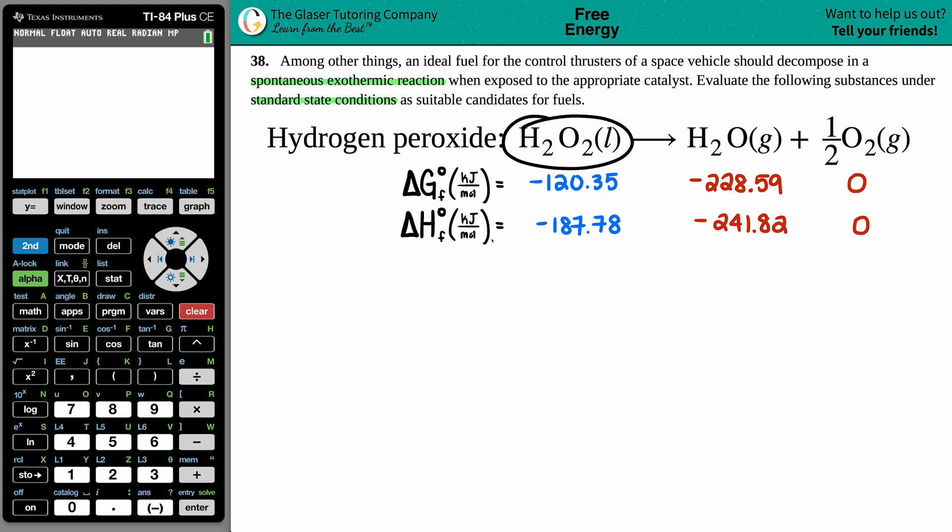Will hydrogen peroxide H₂O₂ liquid be a suitable fuel for these space vehicles? It's got to decompose, it's got to break down into its two substances H₂O gas plus a half O₂ gas, but it has to do that in a spontaneous exothermic way. So there's two different things going on here. We need to make sure that this is spontaneous, that there's no other additional external energy that is needed to make this decomposition happen, and we need to know that it's giving off heat. That's exothermic, releasing heat, but two different variables.